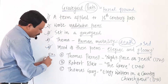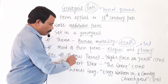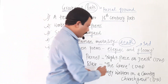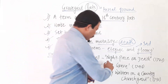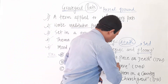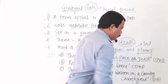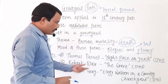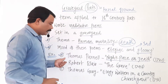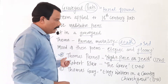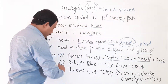Some examples from English literature are given. The first poem is by Thomas Parnell, titled 'Night Piece on Death,' and it was published in 1721. You need to remember this title and the author's name.